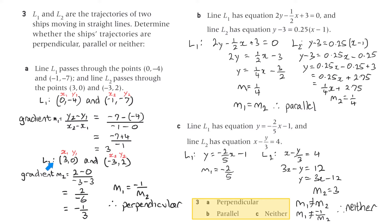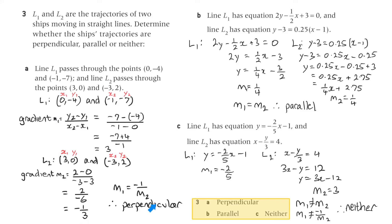Checking line 2 using the points (3, 0) and (minus 3, 2), the gradient works out to minus 1 on 3. Using the perpendicularity relationship m1 equals minus 1 on m2, we can see that m2 equals minus 1 over m1 because m1 is 3. Therefore, the two trajectories are perpendicular.